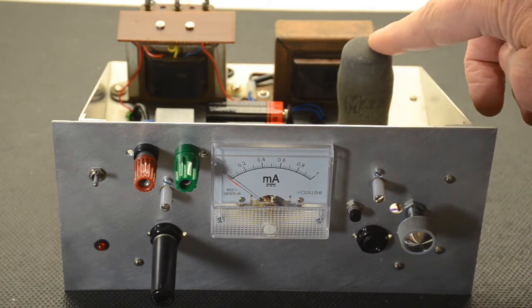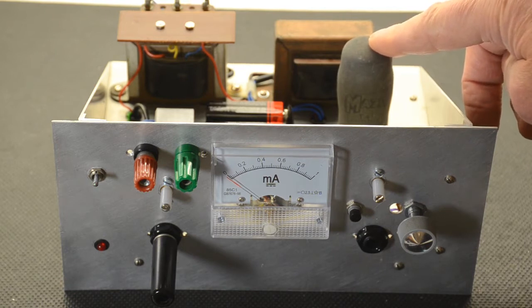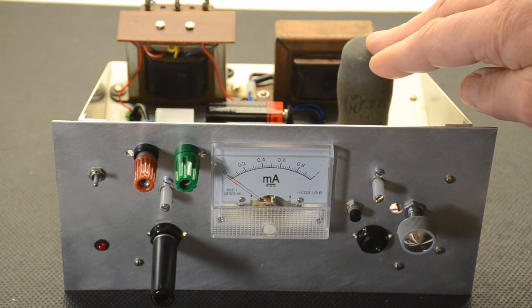We've decided to use the T41 Thyratron, although this means we had to put a dropper resistor for the heater to drop the 6.3 volt from the transformer to 4 volts for this particular valve.